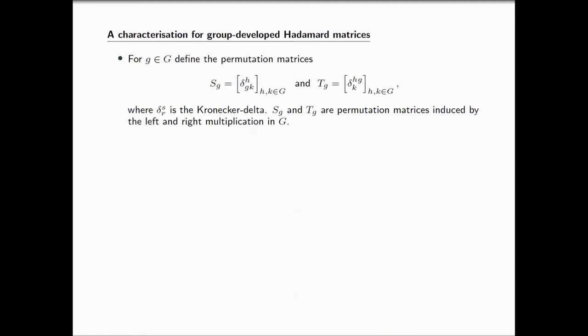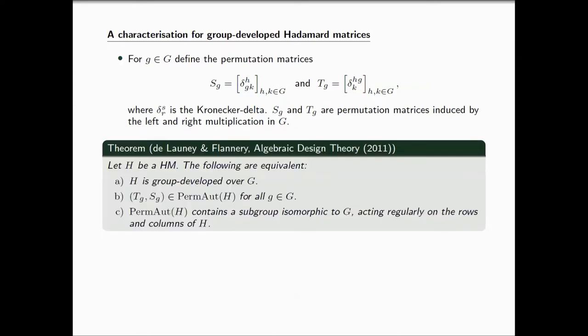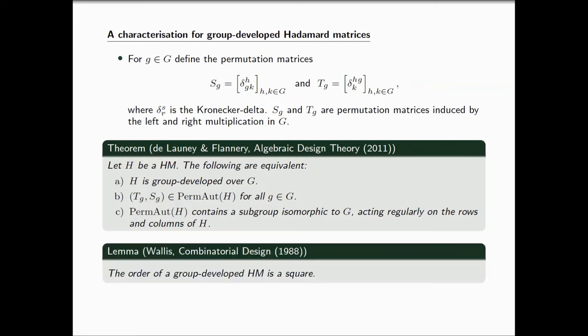I'm going to introduce a characterization for group-developed Hadamard matrices, and this is going to help me introduce a characterization for co-cyclic Hadamard matrices. For every G in G, there's two matrices that are permutation matrices induced by the left and right multiplication in G. They're actually the left and right regular permutation representation of the group G. We have the following characterization due to Delaunay and Flannery. A Hadamard matrix H is group-developed over G if and only if the permutation automorphism group contains a subgroup isomorphic to G that acts regularly on rows and regularly on columns. The order of a group-developed Hadamard matrix is a square.